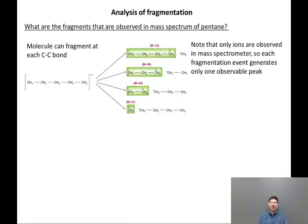Let's look at pentane a little more and try to analyze the fragmentation. What are the fragments that we observe? The molecular ion can fragment at each carbon-carbon bond. Depicted here, there are four carbon-carbon bonds in pentane, and depicted here are the four possible ways that it can fragment. You can have a butyl cation and a methyl radical, a propyl cation and an ethyl radical, an ethyl cation and a propyl radical, or a methyl cation and a butyl radical.